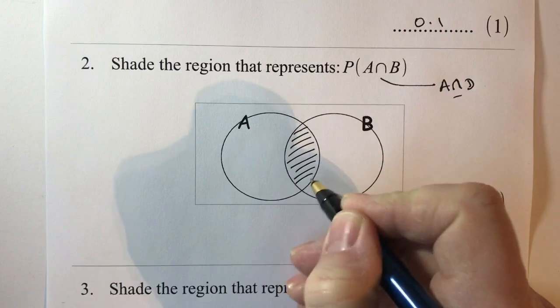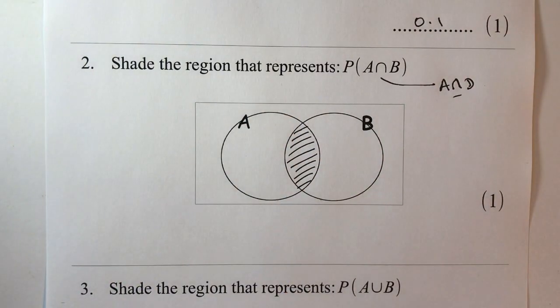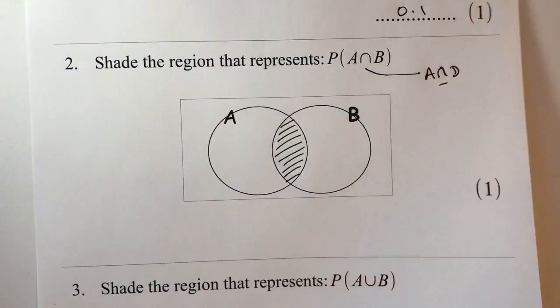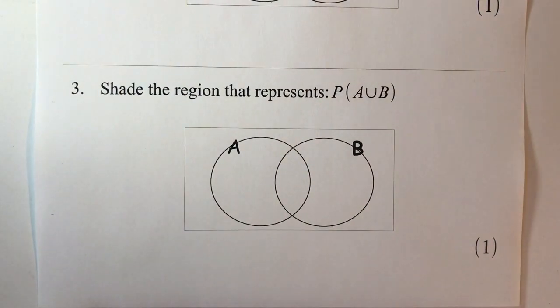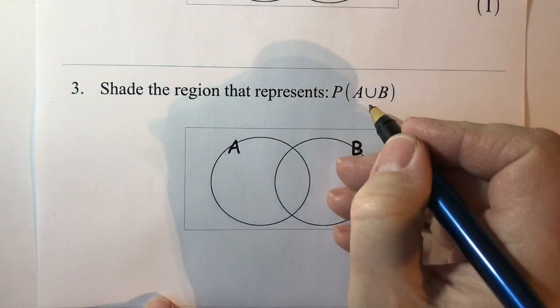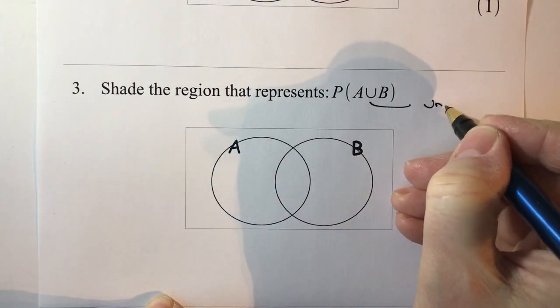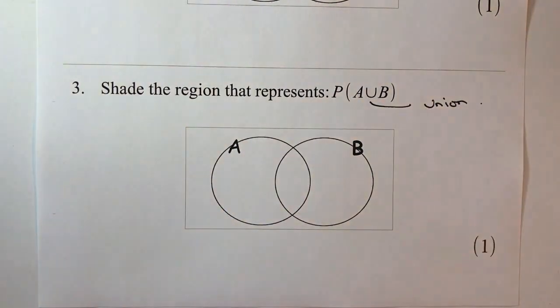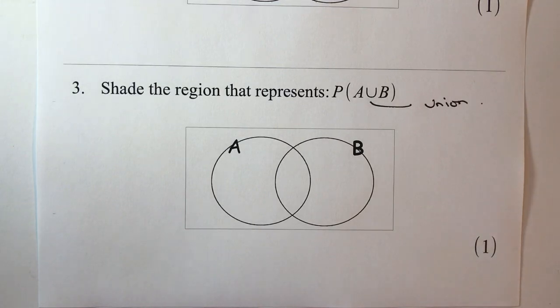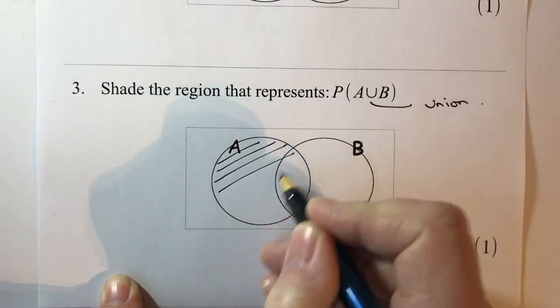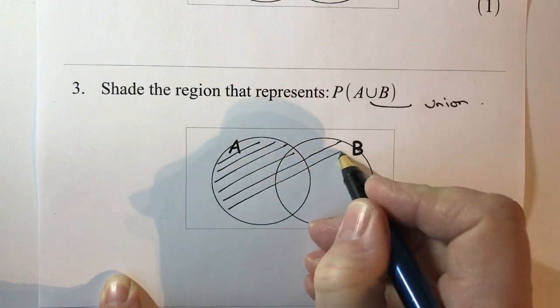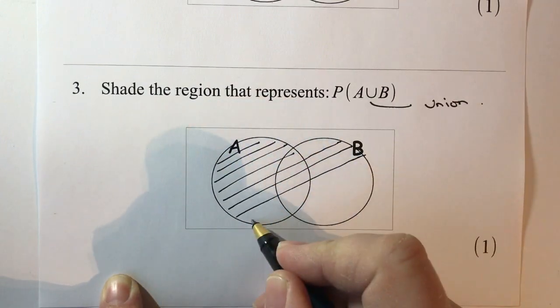So then on to question number three and it says shade the region that represents the probability of A union B. So this word here is union and basically it means everything. Everything that's represented, let's say this is apples and bananas, so the people who like apples and bananas is going to be represented by this whole region here so we can shade in all of that.